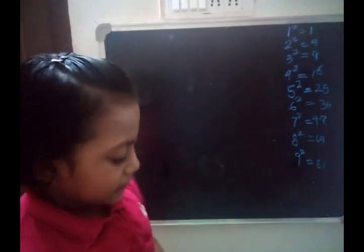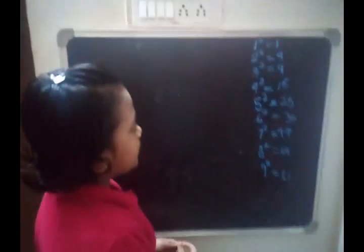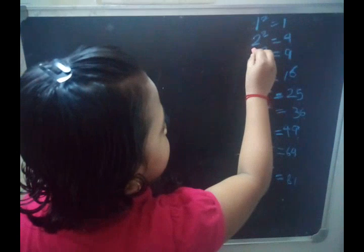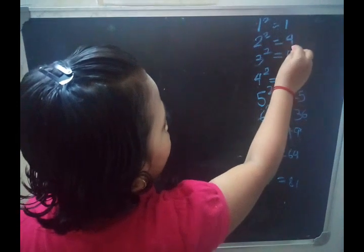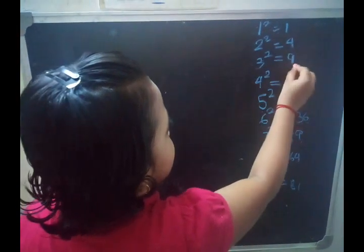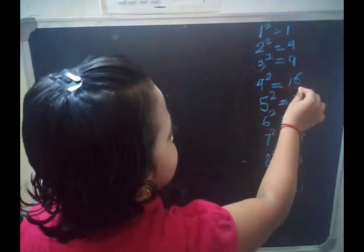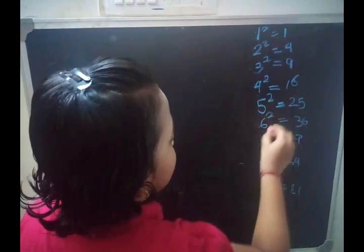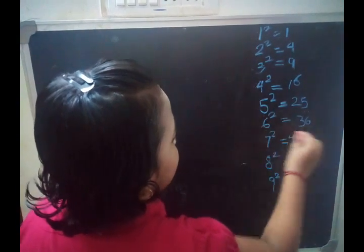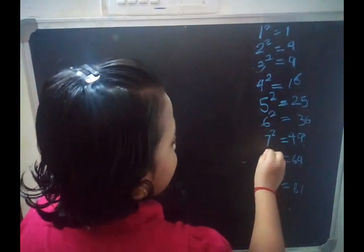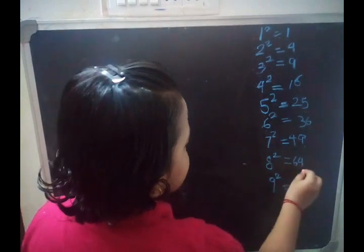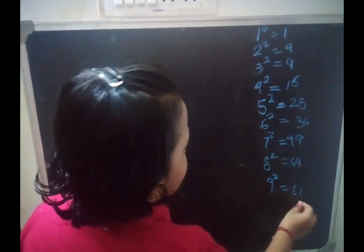Before going to that method, you have to understand one concept. 1 squared is 1, 2 squared is 4, 3 squared is 9, 4 squared is 16, 5 squared is 25, 6 squared is 36, 7 squared is 49, 8 squared is 64, 9 squared is 81.